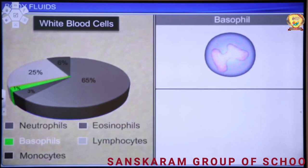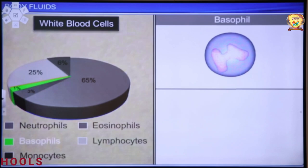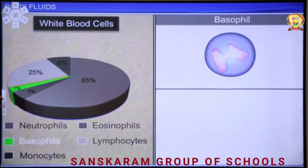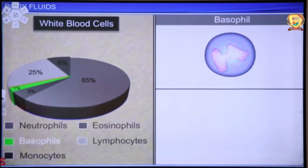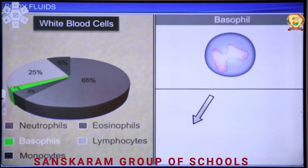Now talking about basophils or mast cells — the smallest cells. They secrete three chemicals: histamine, serotonin, and heparin. Histamine is a vasodilator, serotonin is a vasoconstrictor, and heparin is an anticoagulant — it prevents blood from clotting inside blood vessels.